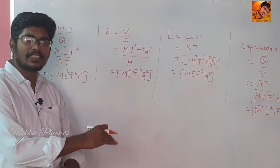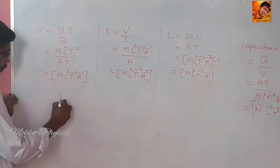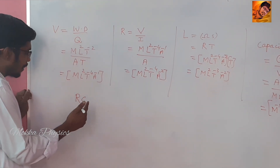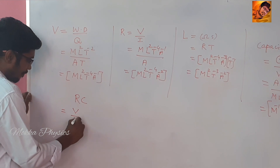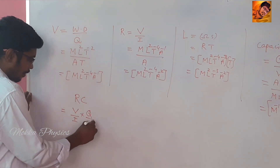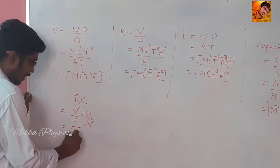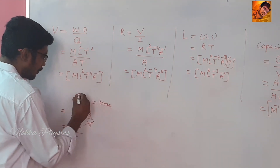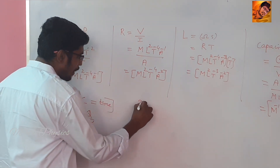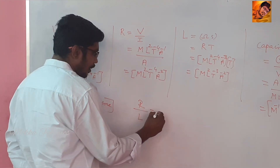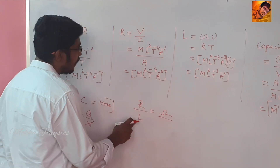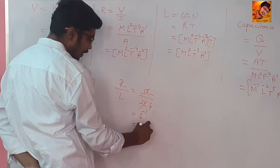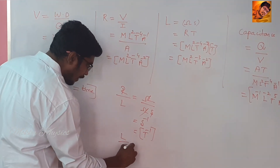You know this combination: R into C gives a factor of time — that is the RC time constant. R by L: R is in ohms, and the unit ohm per second cancels, giving per second — that is T inverse. If we take L by R, L by R is T (time).